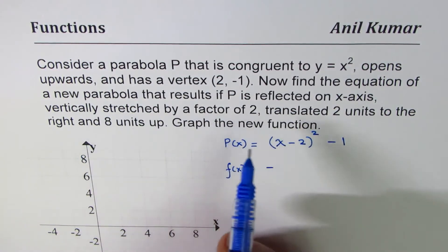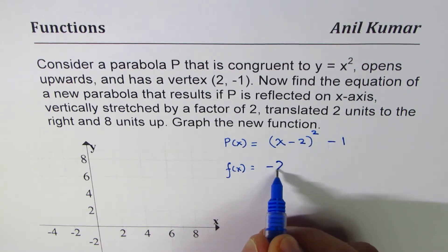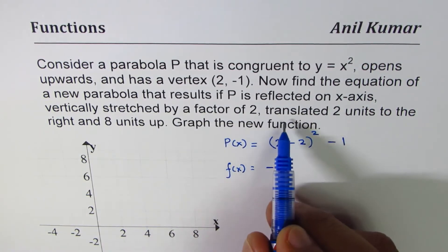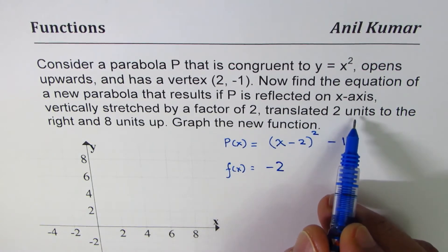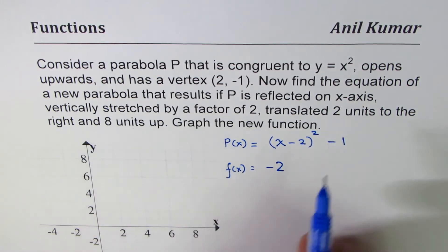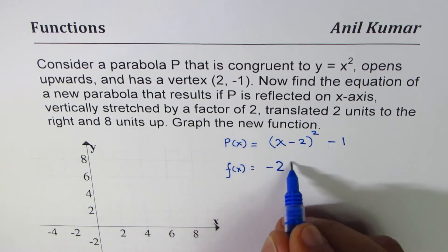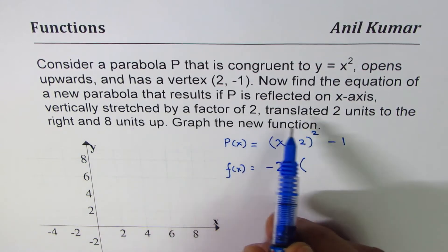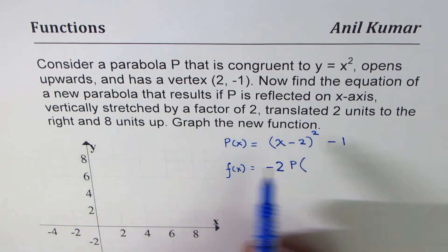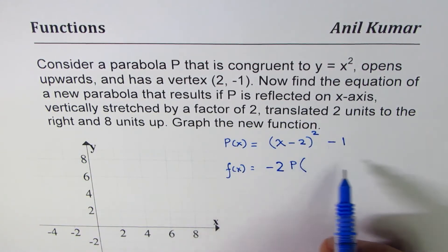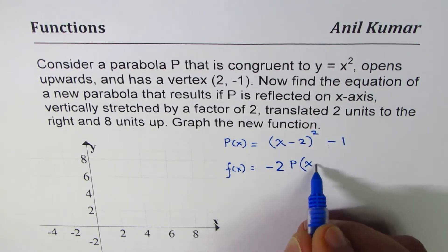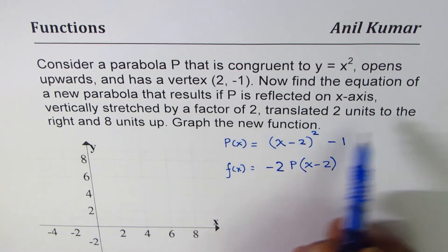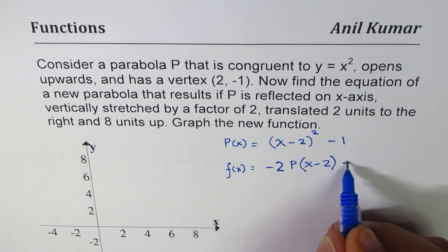That means we are looking for a negative value of this reflected on x-axis. Vertically stretched by a factor of 2, it gets multiplied by 2. Translated 2 units to the right and 8 units up. That means if you are considering that function, then it has been translated 2 units to the right.